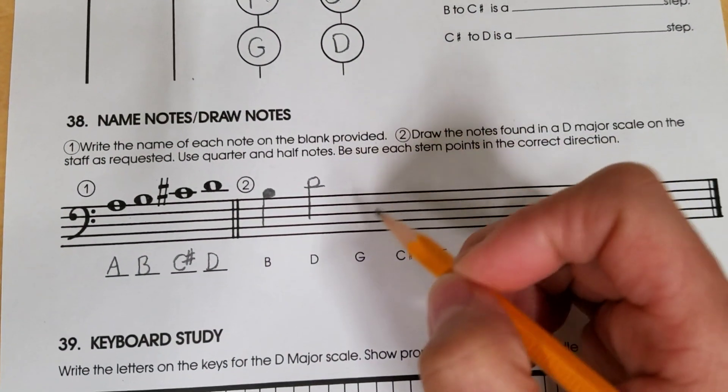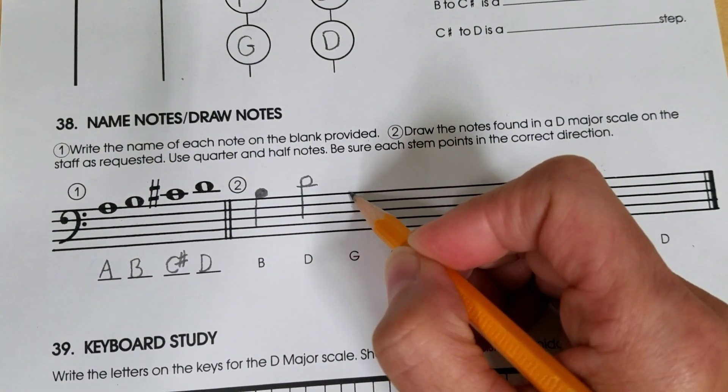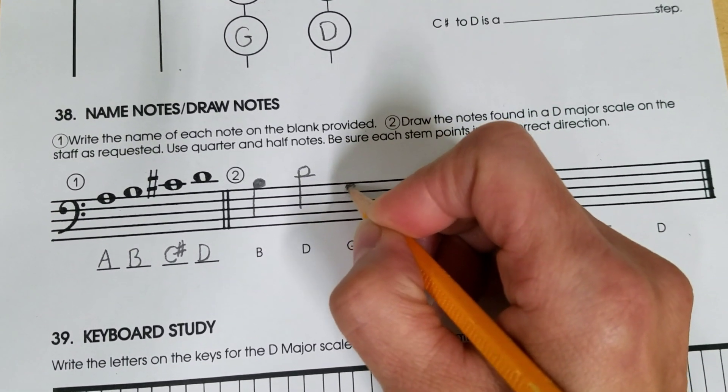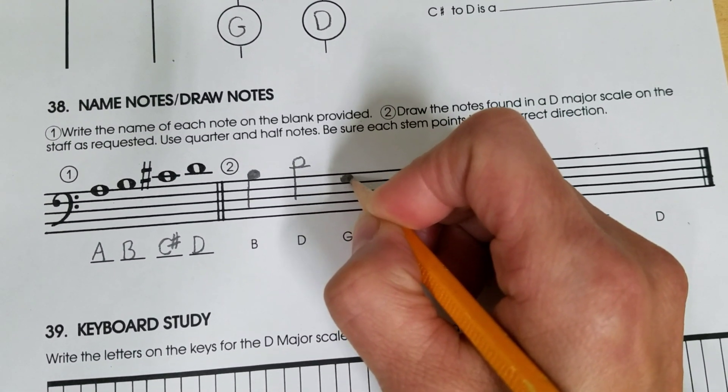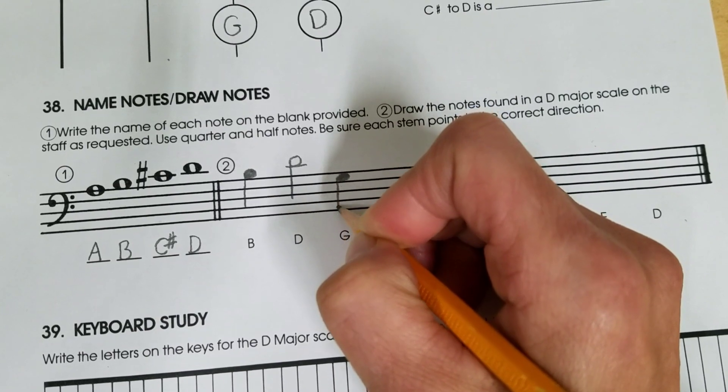G—if you forgot, you could use your saying, 'all cows eat grass.' G is in the top space. And again, the stem goes down before.